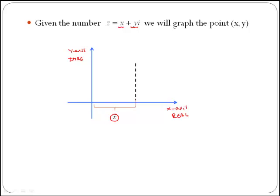By placing our real part and imaginary part, we get the point (x, y), which is the graphical representation of a complex number.